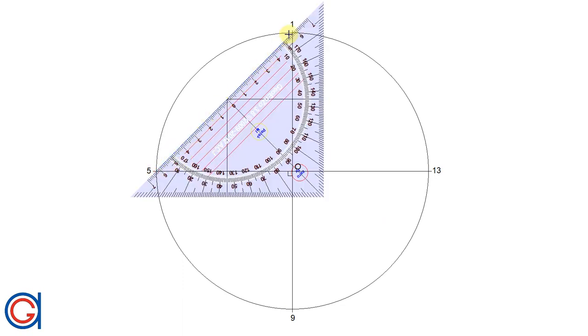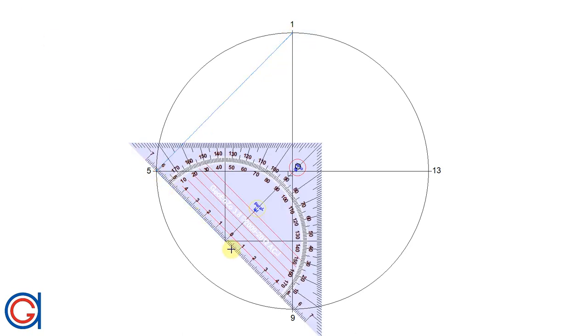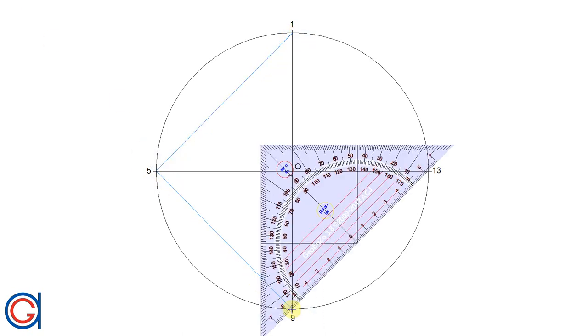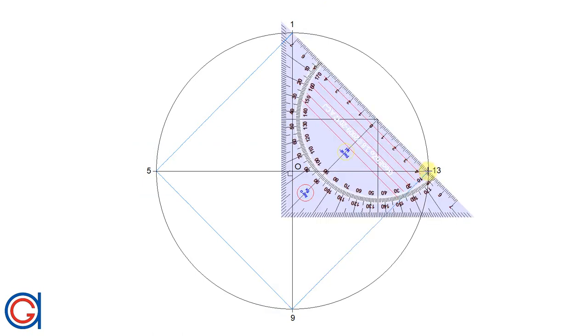The next step is to join these four vertices: from 5 to 1, 5 to 9, 9 to 13, and 13 to 1, in a blue line, as can be seen.